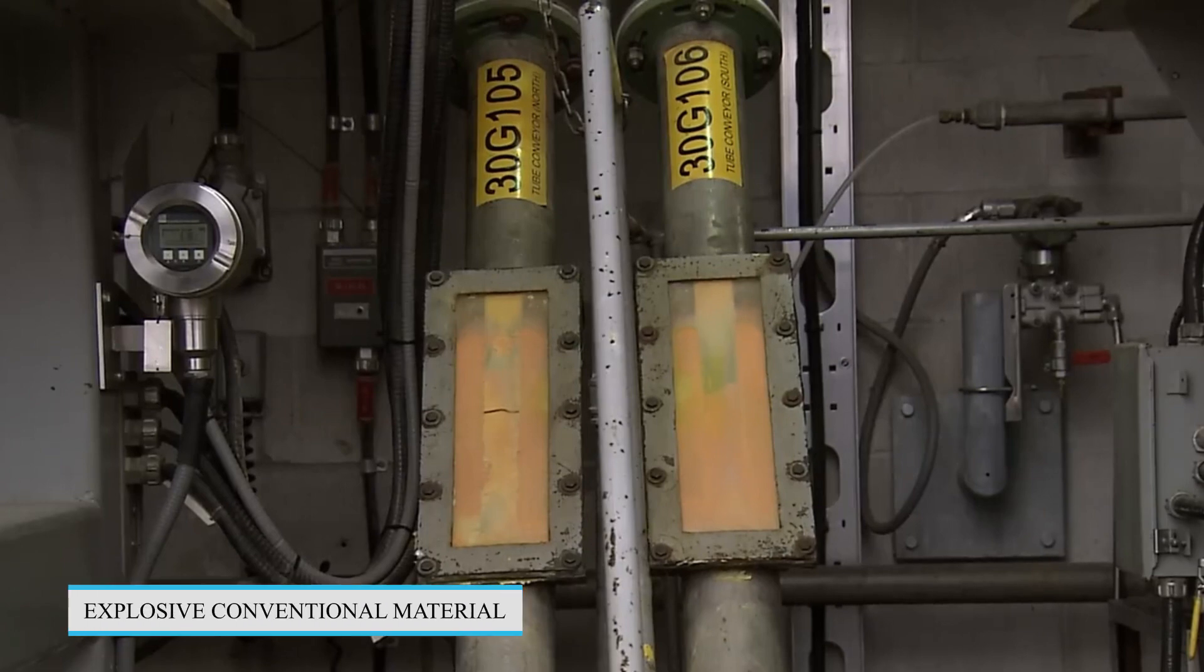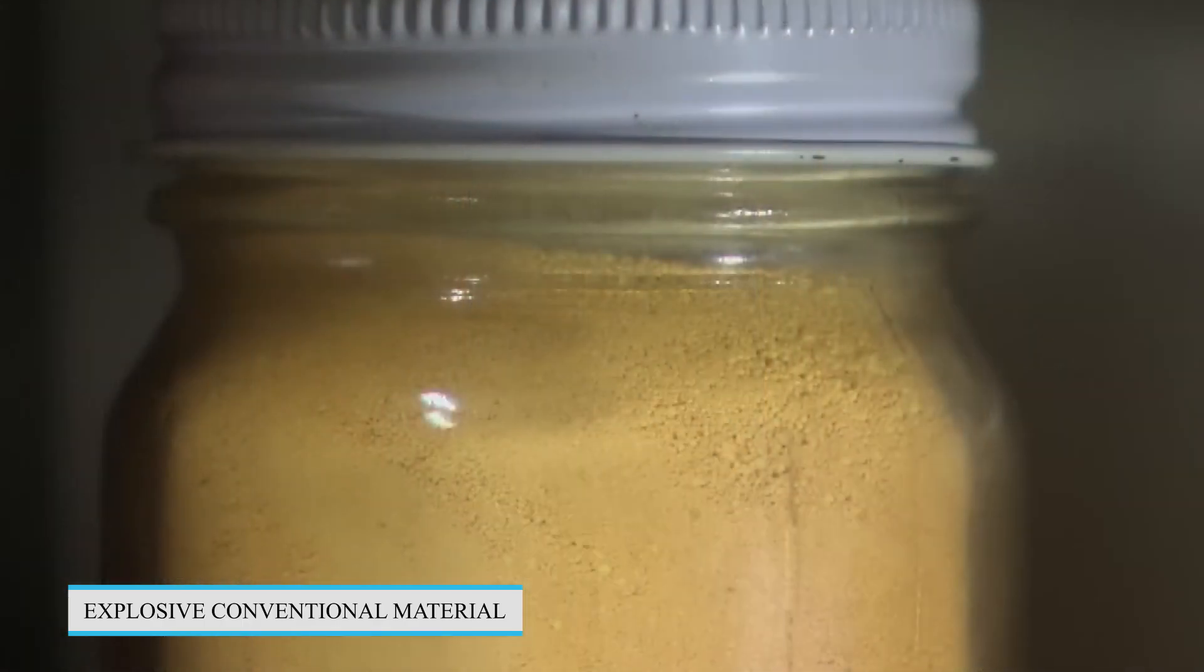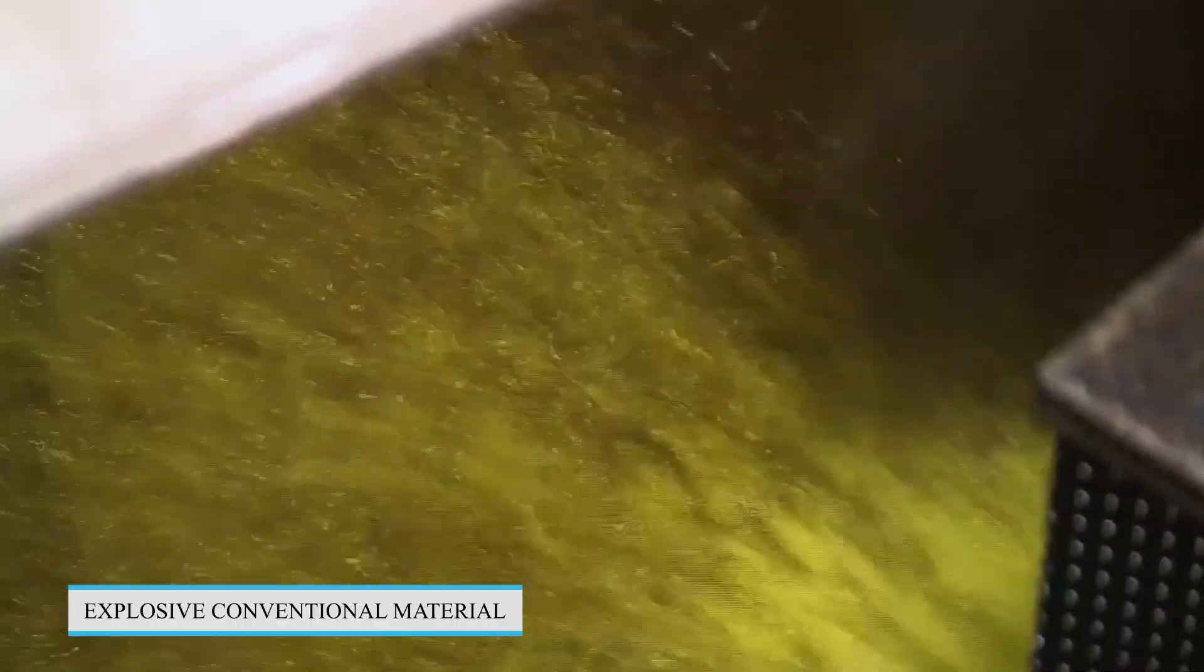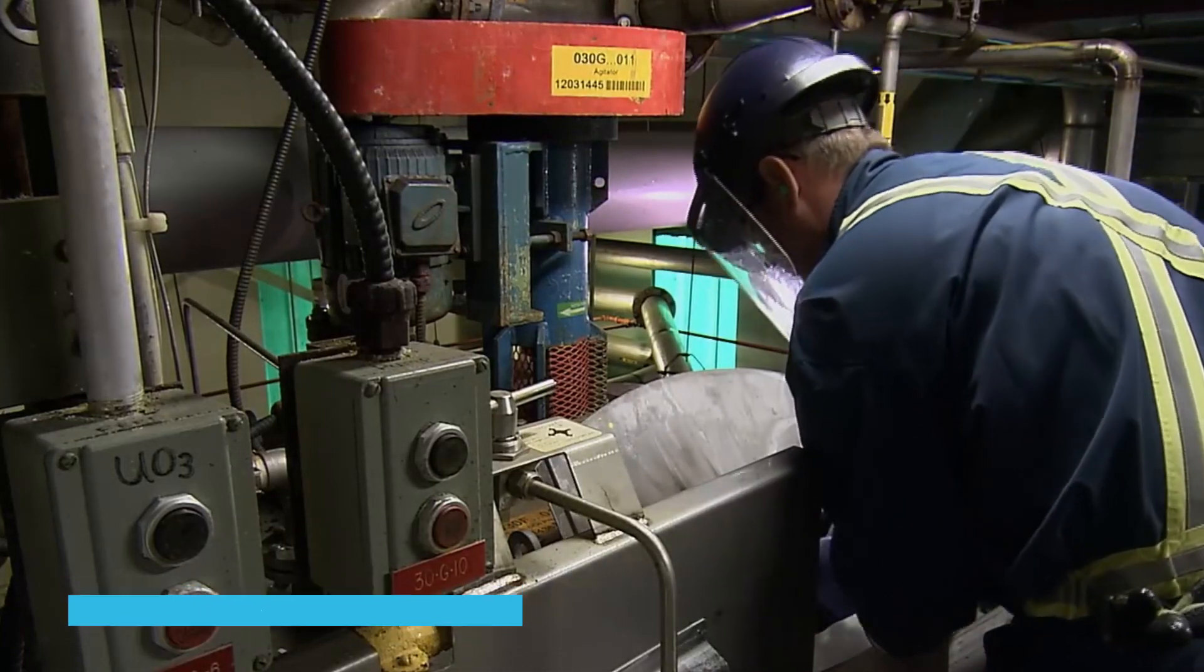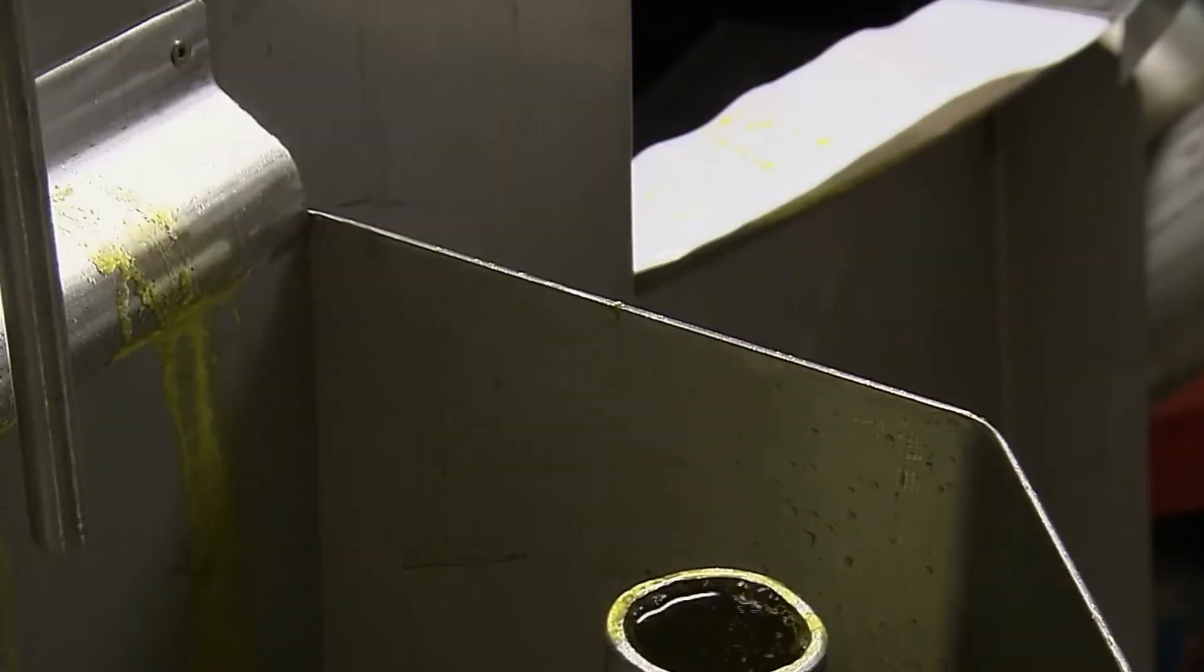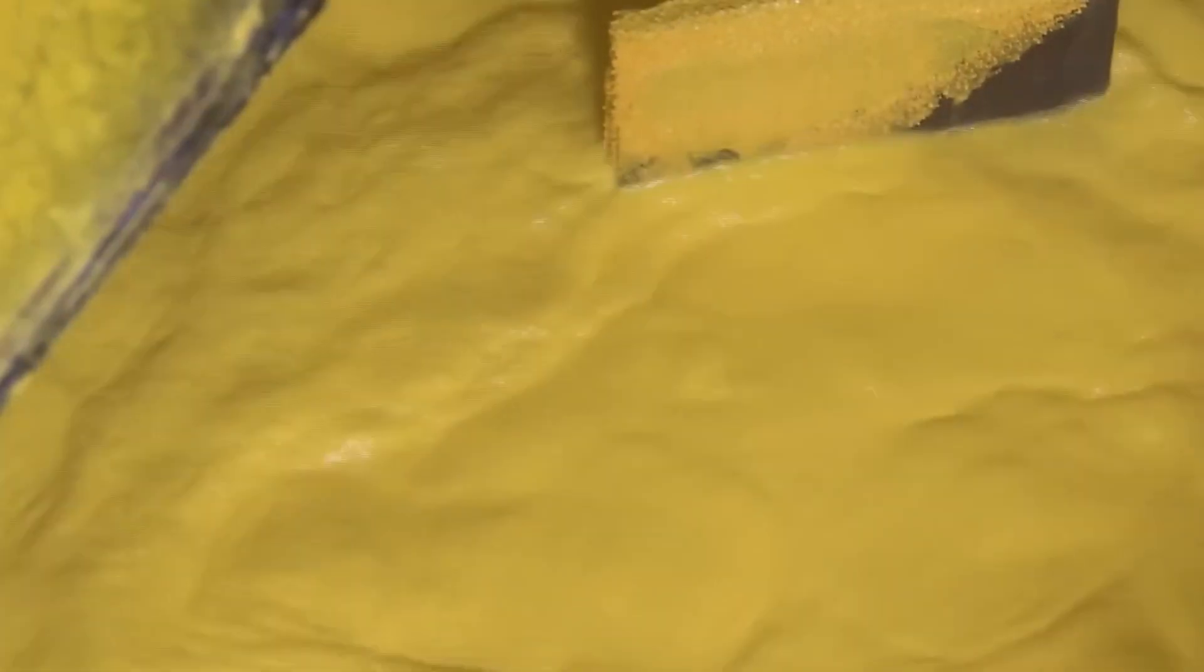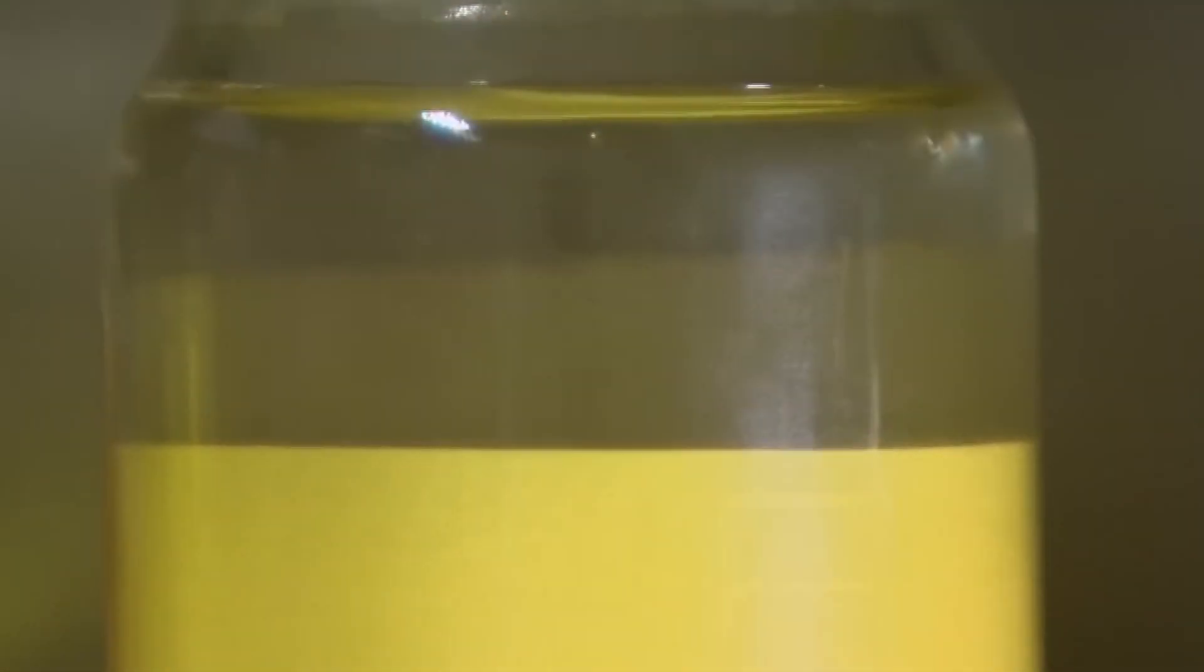Two, explosive conventional materials. Surrounding the fissile core is a layer of high explosives, such as trinitrotoluene or other explosives. These conventional explosives are used to compress and implode the fissile core, causing it to reach supercritical mass and initiate the nuclear chain reaction.